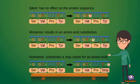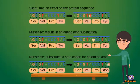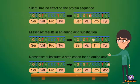With silent mutations, there is no effect in the protein sequence. Missense mutations, however, do change the protein sequence. Nonsense mutations substitute a stop codon for an amino acid.